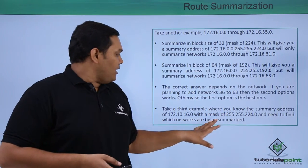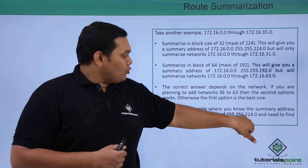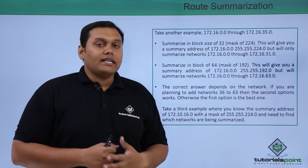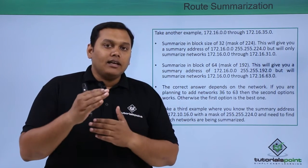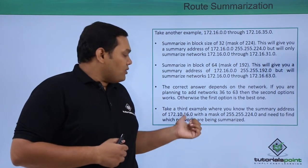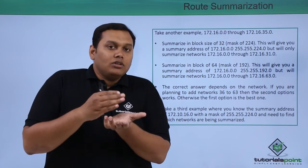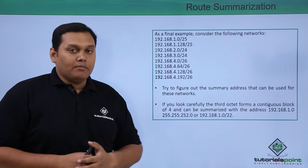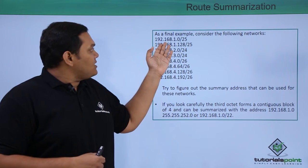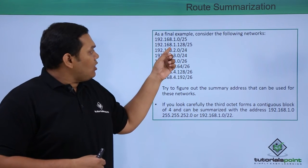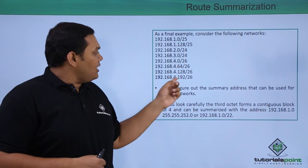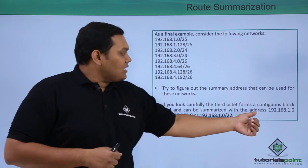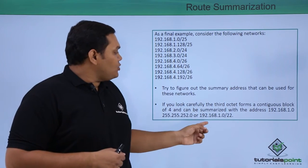A third example: the address starts from 16.0 and has a subnet mask with 224 in the third octet. It starts from 16.0, and 255 minus 224 gives 31, so you summarize from 172.16.16.0 to 172.16.27.0. The mask also depends on the block size of the network. As a final example, addresses from 192.168.1.0/25 through 192.168.1.128/26 can be summarized — it starts from 1.0/25 and the summary ends at 1.0/22.